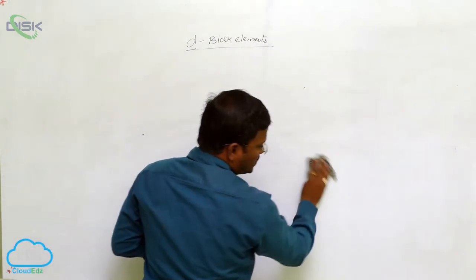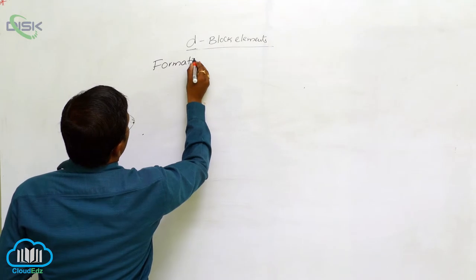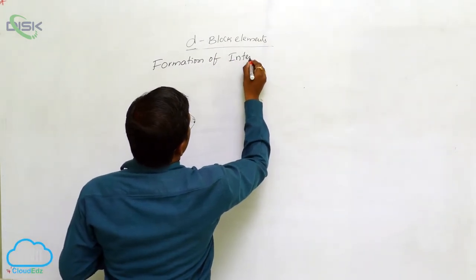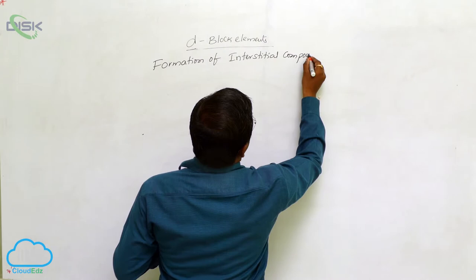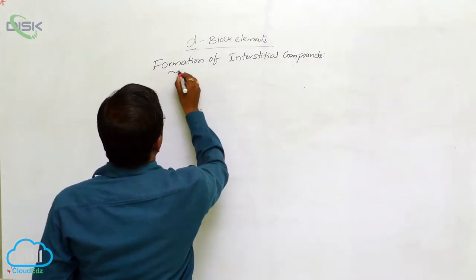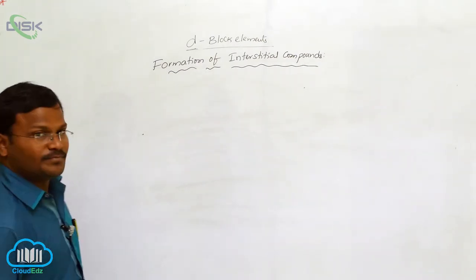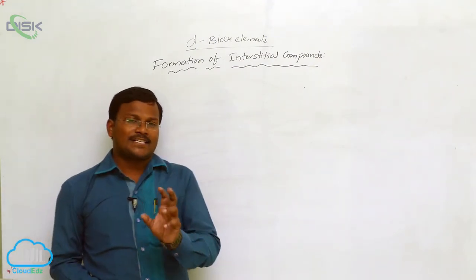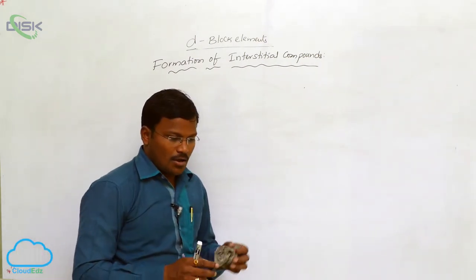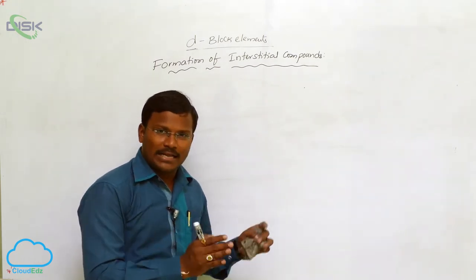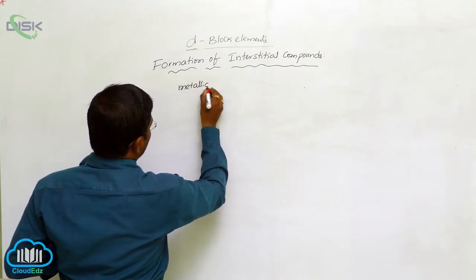The next property is the formation of interstitial compounds. All d-block elements are metals and exhibit metallic geometry.